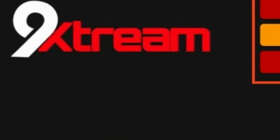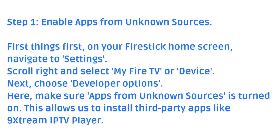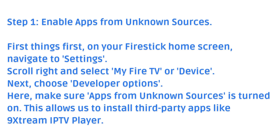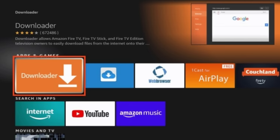Scroll right and select My Fire TV or Device. Next, choose Developer Options. Here, make sure apps from unknown sources is turned on. This allows us to install third-party apps like 9-Stream IPTV player.